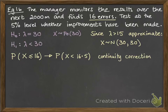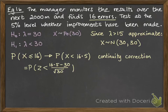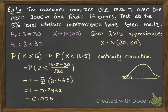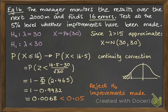With the continuity correction, P(X ≤ 16) becomes P(X < 16.5). You may want to look up continuity corrections if you can't remember. We then find the probability for a Z value: (16.5 − 30) divided by the square root of 30. This is on the left-hand side, so we use 1 minus the positive value. The result is less than 5%, so we can reject the null hypothesis again. There is significant evidence to agree with the factory manager's claim that improvements have been made.